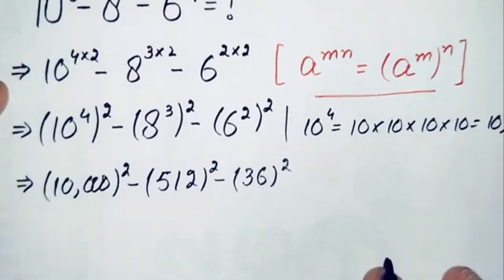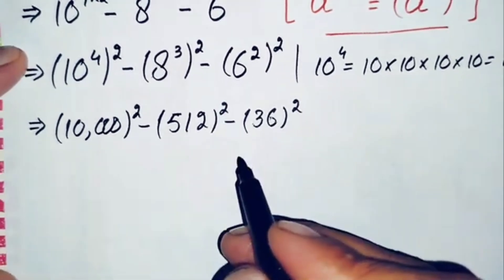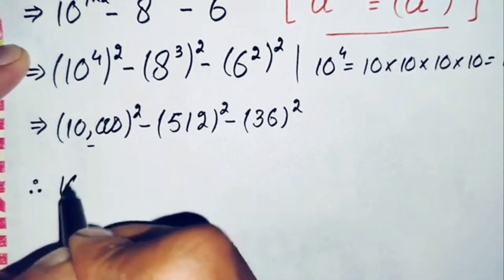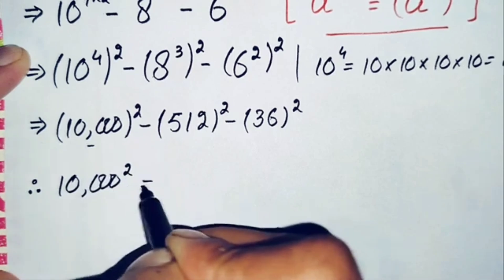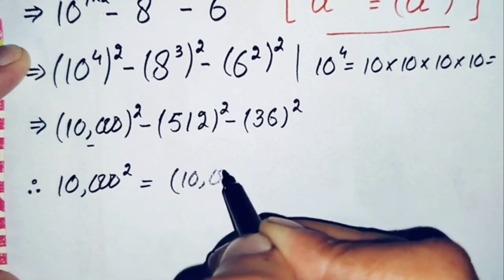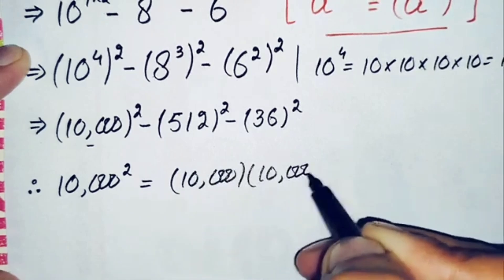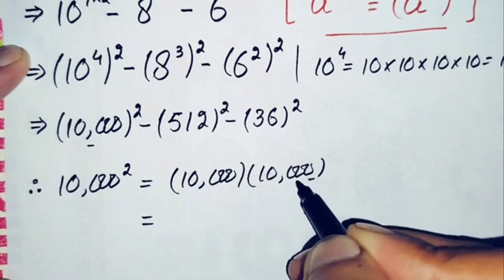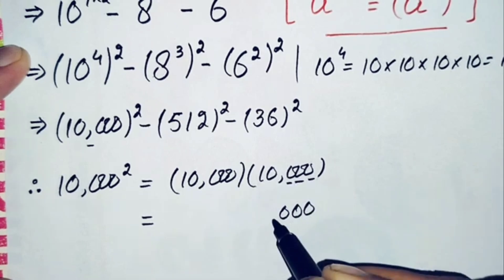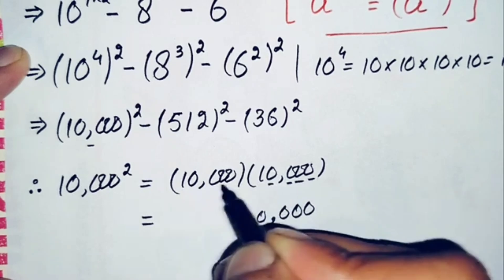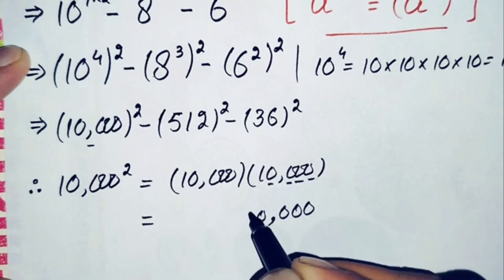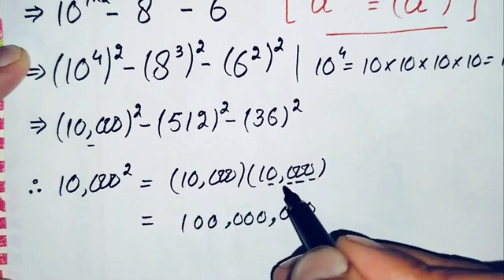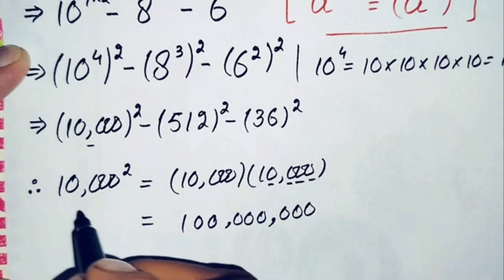Now we will try to find the value of each square number. First we find the value of 10,000 square. We can write 10,000 square as 10,000 times 10,000 and multiply these two numbers. Working through the multiplication, 10,000 times 10,000 gives us 100,000,000. So the value of 10,000 square is 100 million.